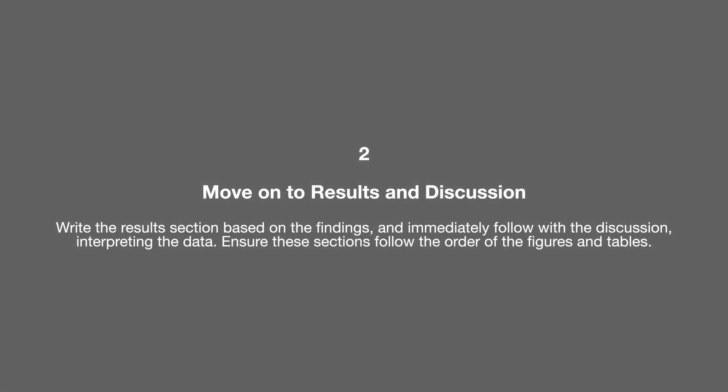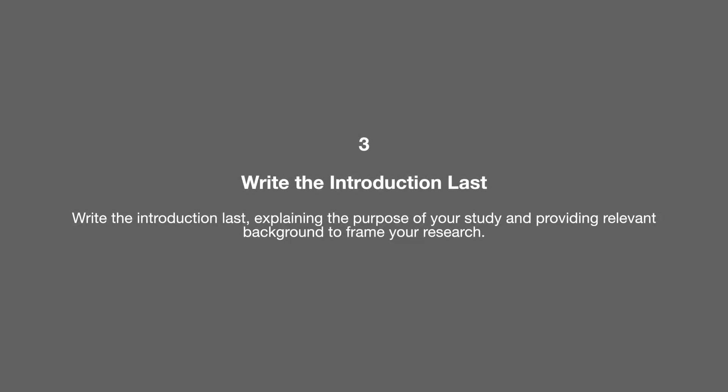The second part is moving on to the results and the discussion. Write the results based on your findings, then the discussion interpreting your data. Make sure it follows the order of your figures — if experiment A comes first in the results, discuss experiment A first in the discussion too. The third part is writing the introduction: explain the purpose of your study and provide relevant background. Write it last, because you need to know what the key results and discussion are first, so you approach it knowing what gap in the literature you have filled.